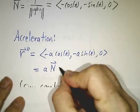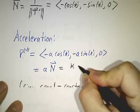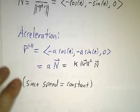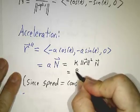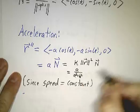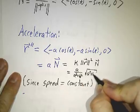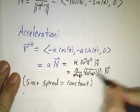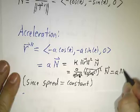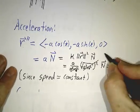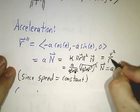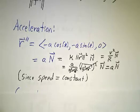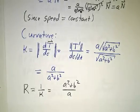The acceleration equals the curvature times the speed squared times the normal vector. The curvature is a/(a² + b²) and the speed squared is a² + b², so these cancel and you just get a·N. Another way to write this is that it's the speed squared divided by the radius of curvature times the normal — that's always the normal component of your acceleration, v²/r, where r = (a² + b²)/a.